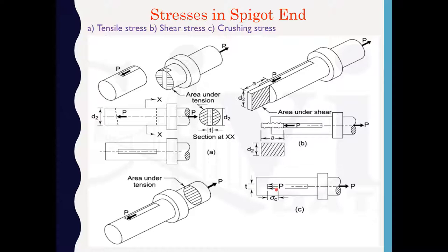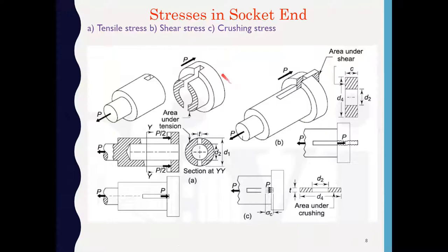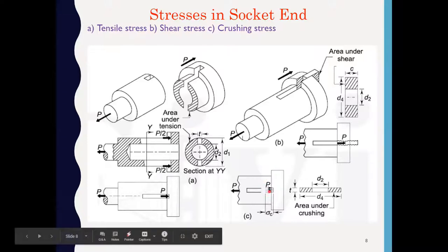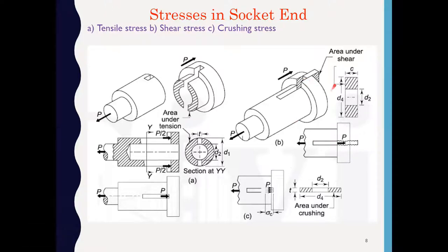Now we have to see the stresses in the socket end. The socket is also subjected to tensile stress, shear stress, and crushing stress. This is the resisting area for tensile failure in the socket end. Another type of failure in the socket end is shear failure, which is double shear. The third type of failure is crushing failure, and the crushing area is shown in the 3D diagram.